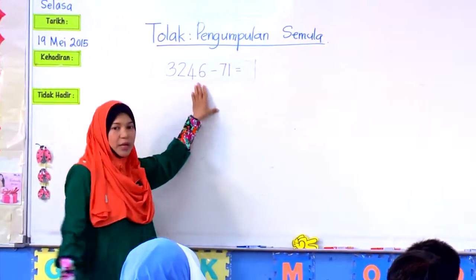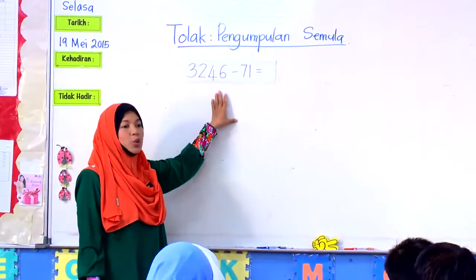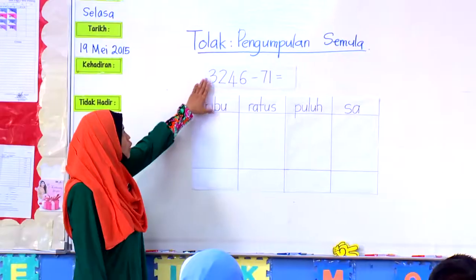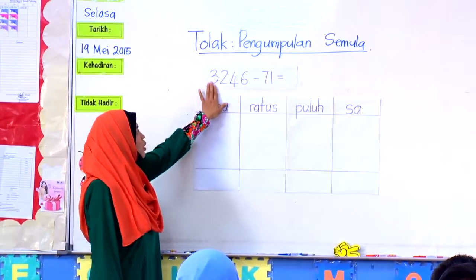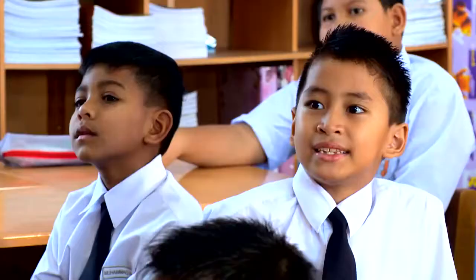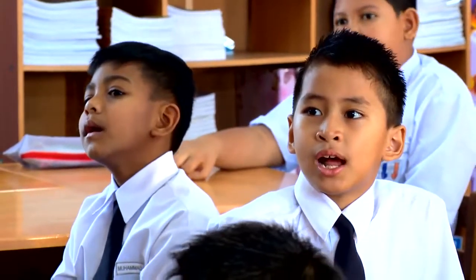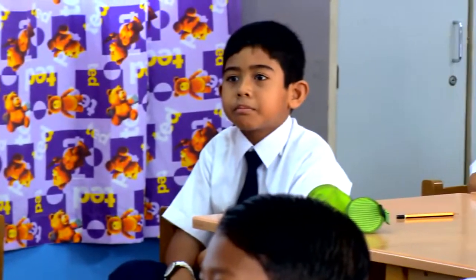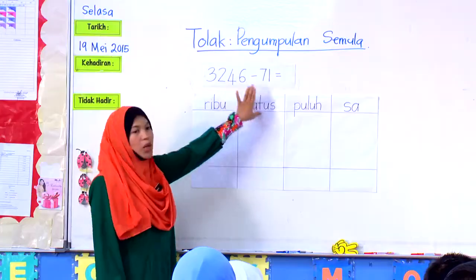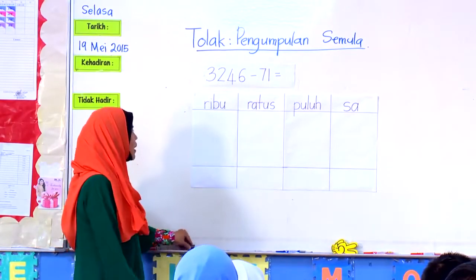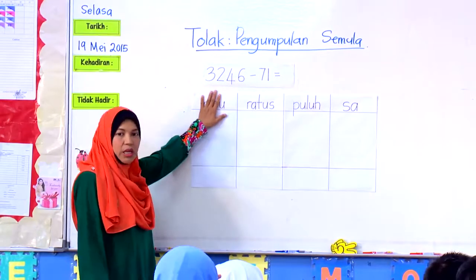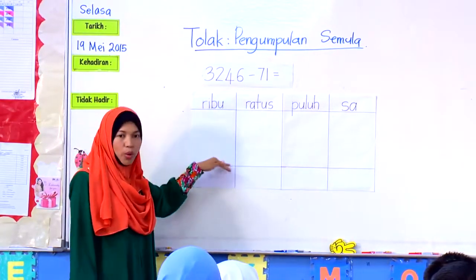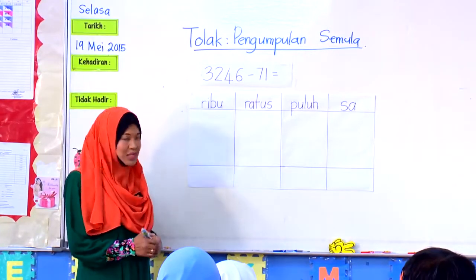Ini yang dikatakan ayat matematik. Jadi, kita akan tukar dalam bentuk lazim. Sekarang ini kamu tengok berapa nombor yang diberi: 3,246 tolak dengan 71. Daripada soalan yang diberi, kita tukar kepada bentuk lazim. Saya akan masukkan nombor mengikut nilai tempat masing-masing.